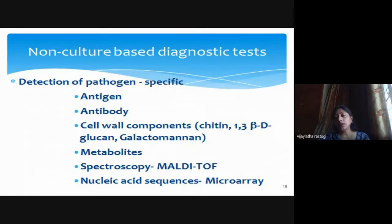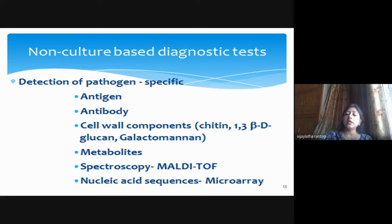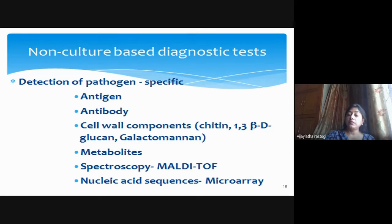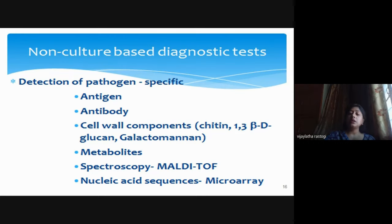To overcome shortcomings of conventional methods, non-culture-based diagnostics are available: detection of pathogen-specific antigen, antibody, and cell wall components including chitin, 1,3-beta-D-glucan, and galactomannan. Galactomannan detection is highly specific for invasive aspergillosis, while 1,3-beta-D-glucan detection is useful for other fungal infections. Detection of metabolites using spectroscopy and MALDI-TOF is increasingly used.